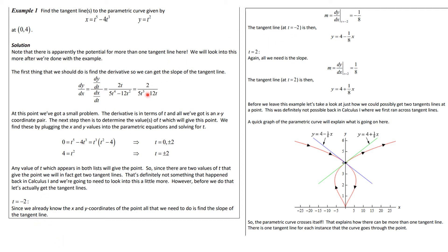At t = −2, substituting into dy/dx = 2/(5t³ − 12t) gives −1/8. So the tangent line is y − 4 = (−1/8)(x − 0), which simplifies to y = 4 − (1/8)x. At t = +2, the slope is +1/8, giving the tangent line y − 4 = (1/8)x, or y = 4 + (1/8)x.